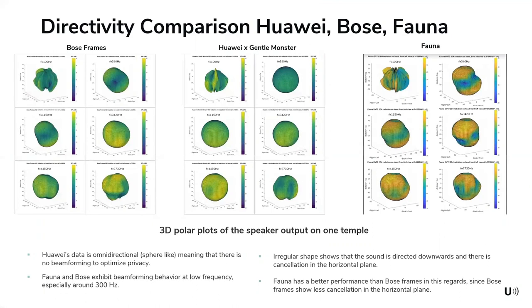This slide presents an overview of the reactivity measurements done by Usound, comparing Bose, Huawei, and Fauna glasses. The Huawei chart shows omnidirectional performance, meaning no beamforming for privacy. Fauna and Bose glasses exhibit beamforming behavior. Comparing Fauna and Bose, Fauna demonstrates much better performance with more sound cancellation in the horizontal plane.